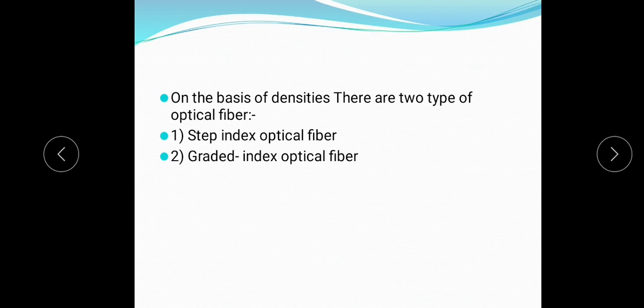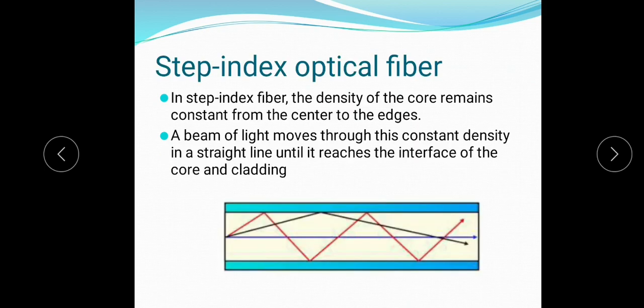Based on the density profile, we can classify the cable into two types: Step Index and Graded Index. In Step Index Fiber, the density of the core remains constant from the center to the edge. The beam of light moves through this constant density in a straight line until it reaches the interface of the core and the cladding. So in Step Index, the signal travels in a straight line.